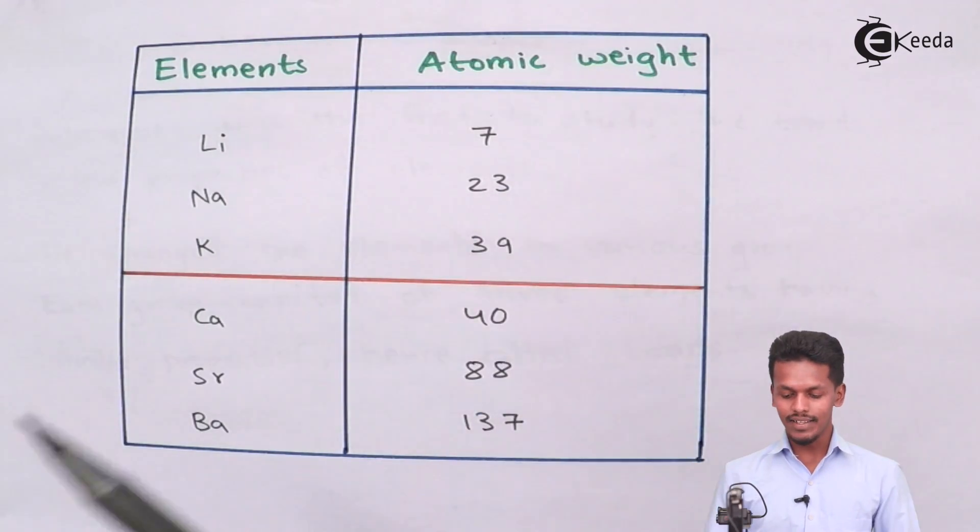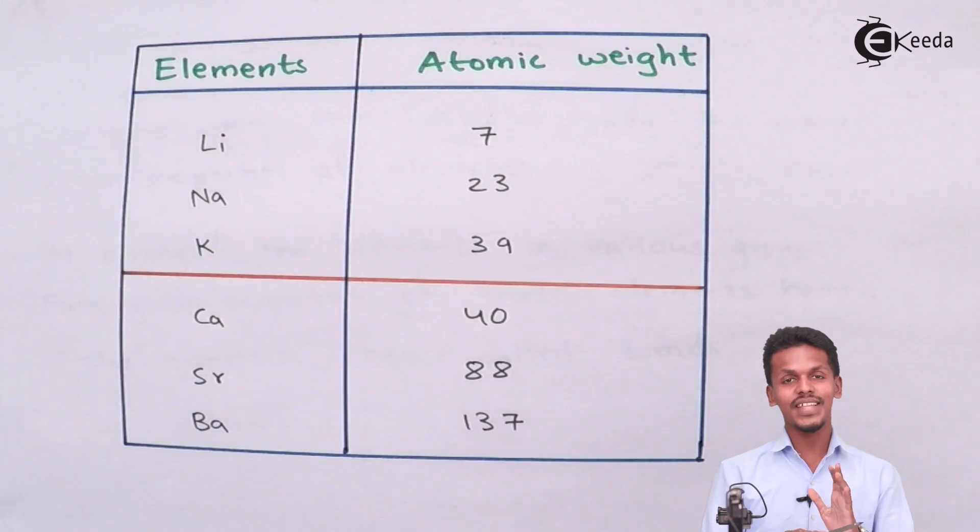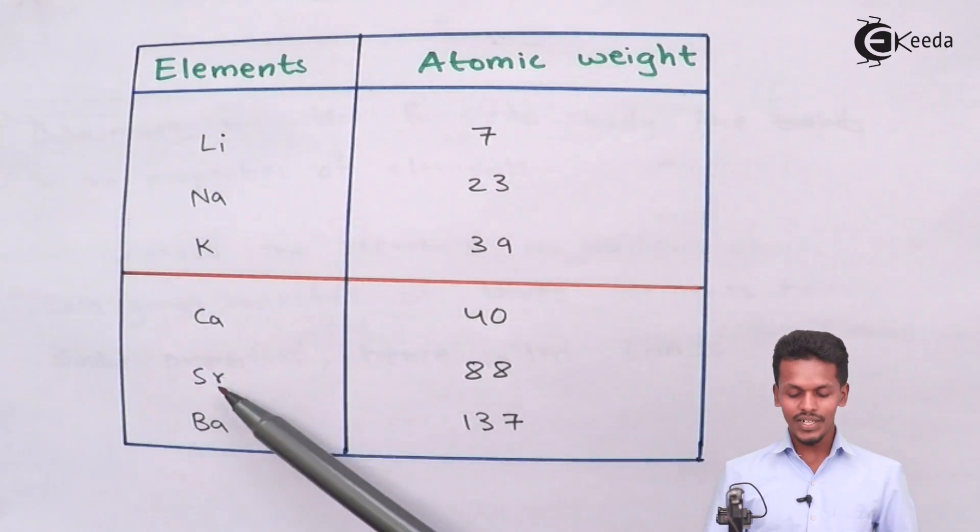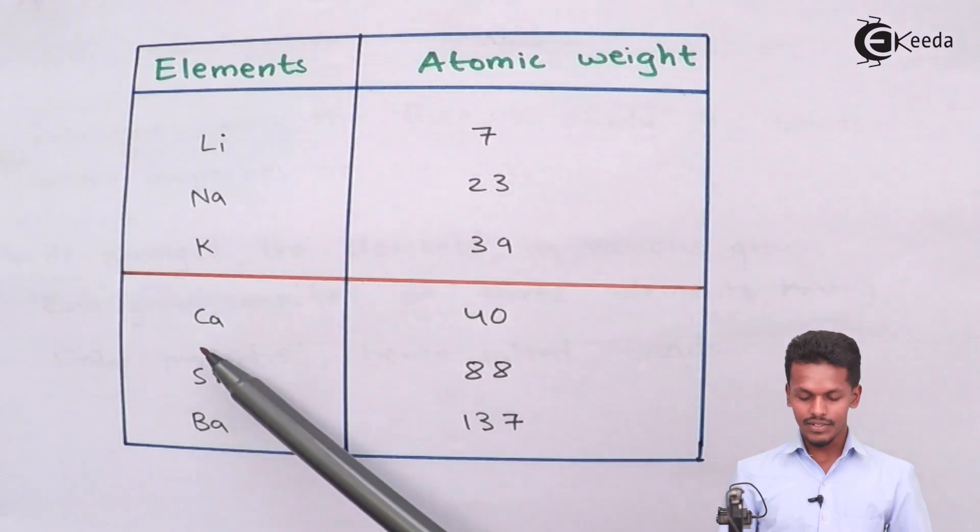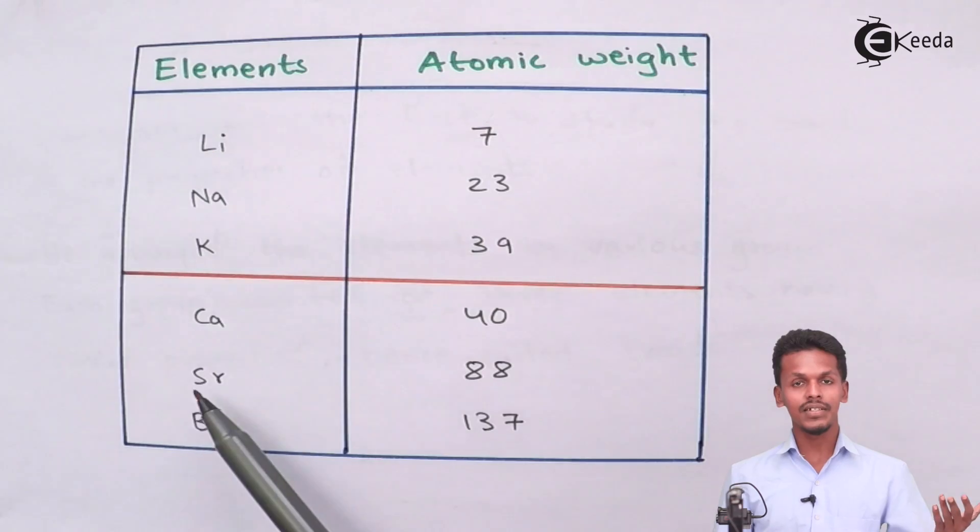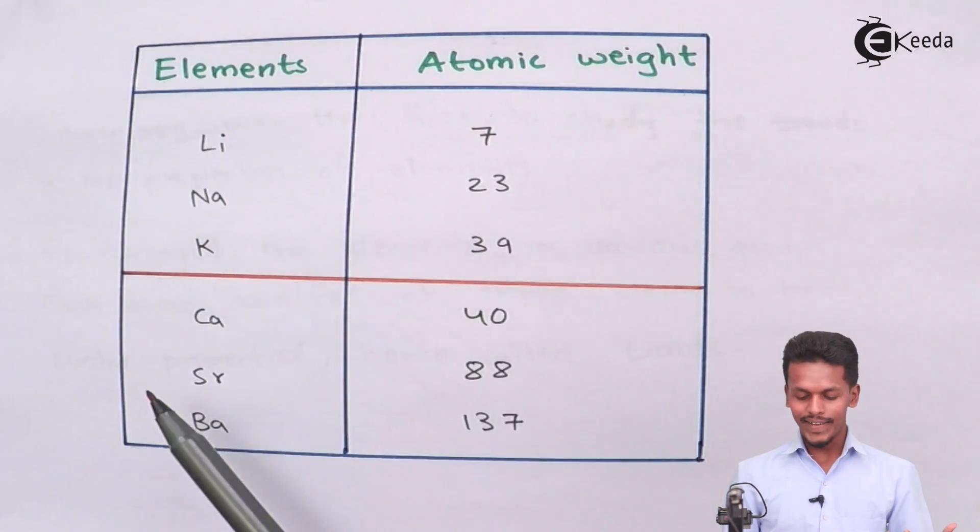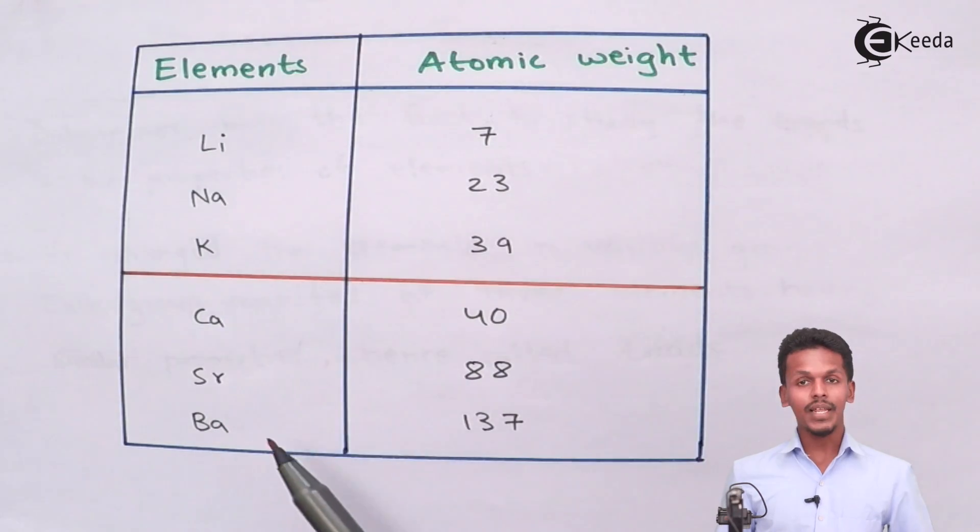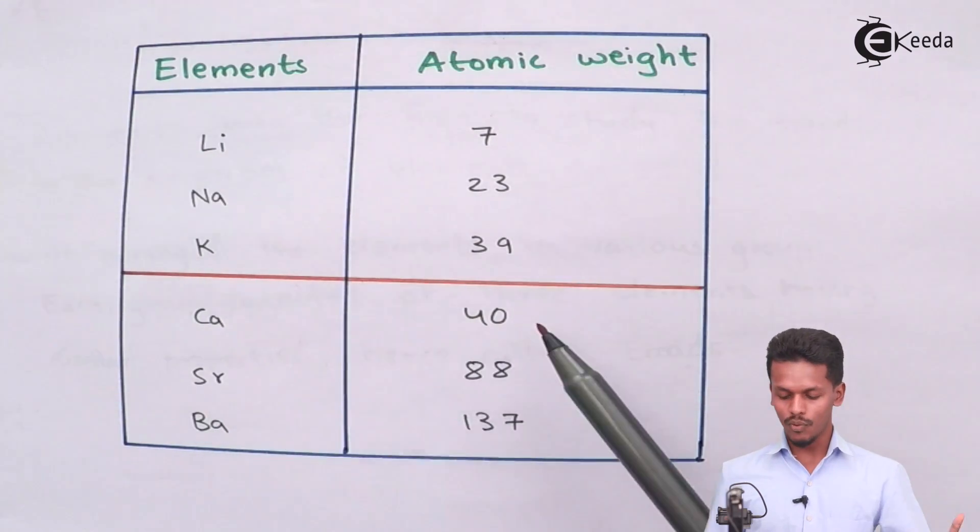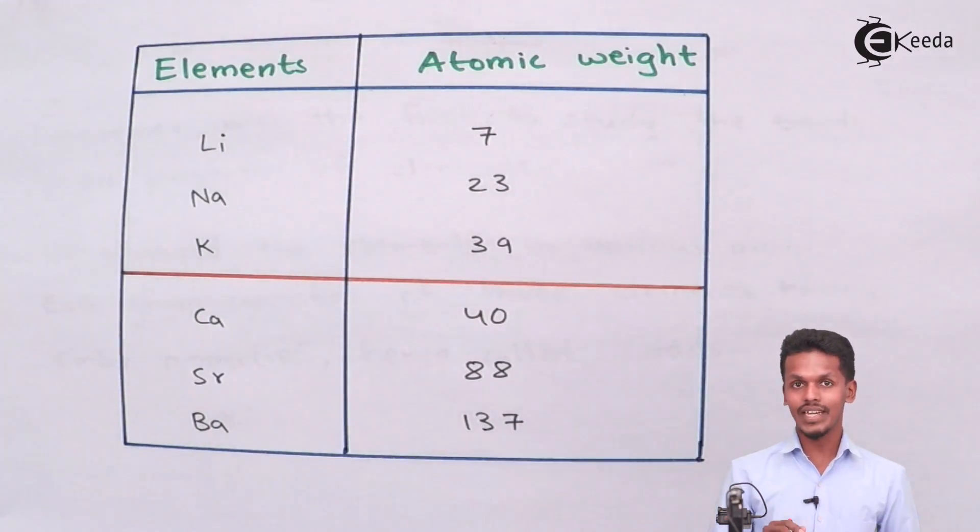Therefore this shows that it had a particular sequence with that of the first and the third element. Talking about calcium, strontium and barium, strontium is the middle element which has an atomic weight of 88, while calcium and barium had atomic weight of 40 and 137. So let us take the average and see whether it is valid for this or not.